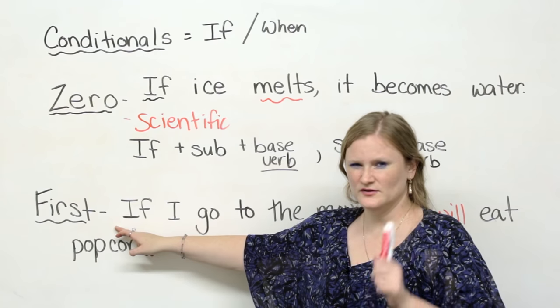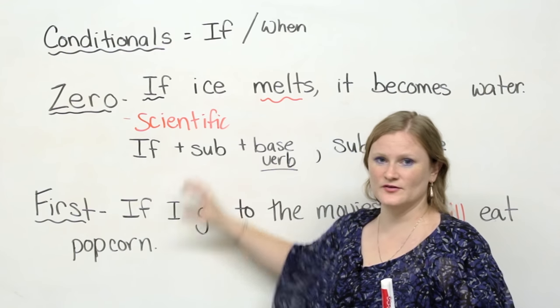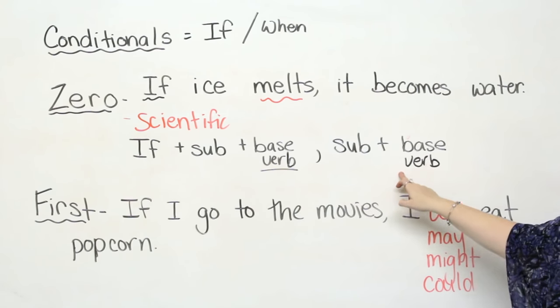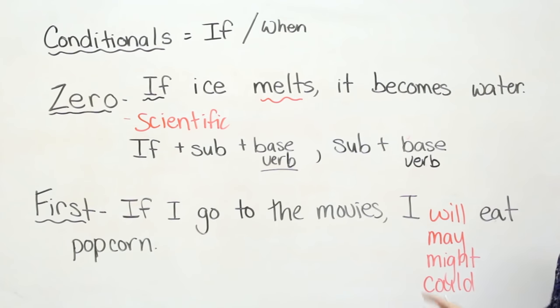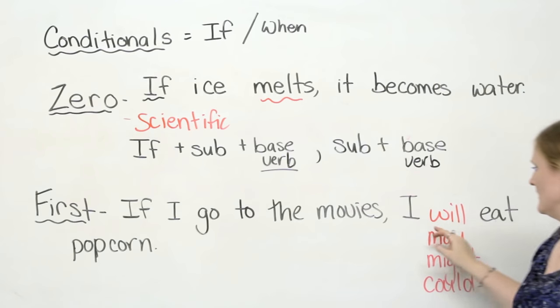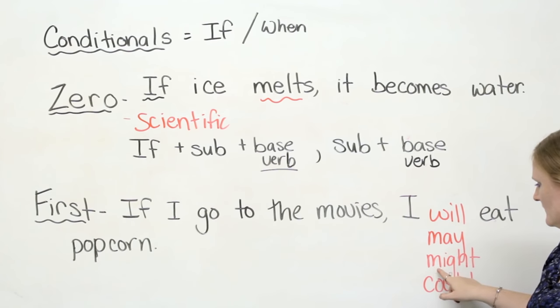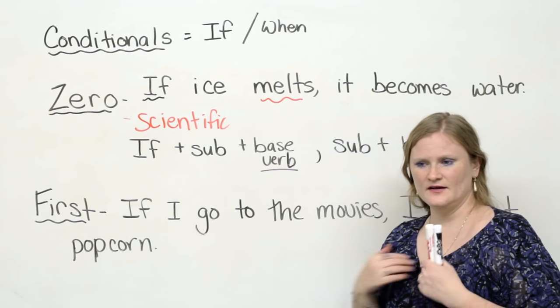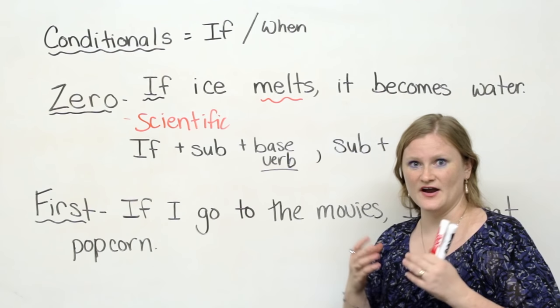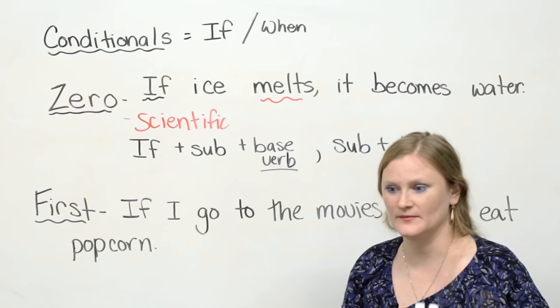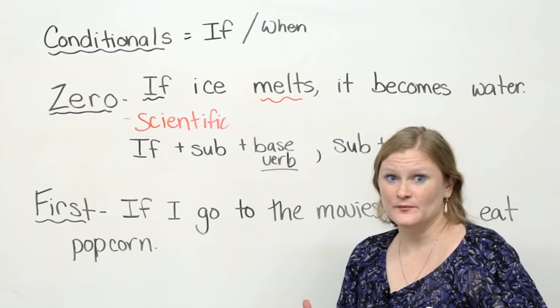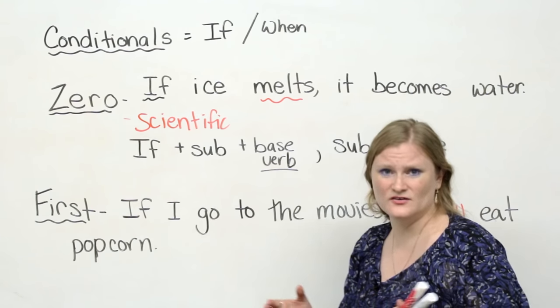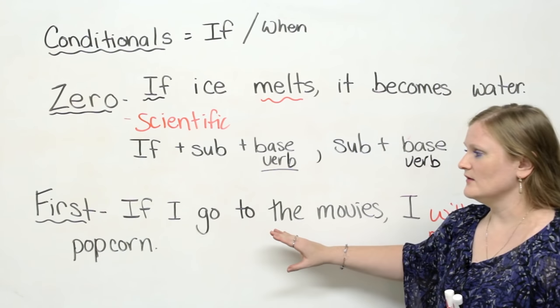I just want you to look at the difference in the composition. Zero conditional is if plus subject base verb, subject plus base verb again. Take a look at this sentence. If I go to the movies I will, or you can use may, might, or could, eat popcorn. Is this scientific? If I go to the movies, this means that I have to 100% of the time eat popcorn. Not scientific. Some people don't even like popcorn, or maybe you don't have any money, or maybe you want chocolate instead of popcorn.